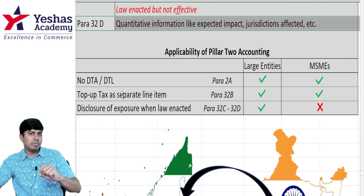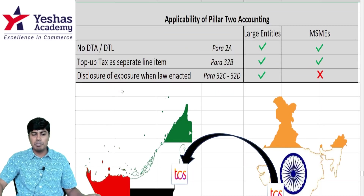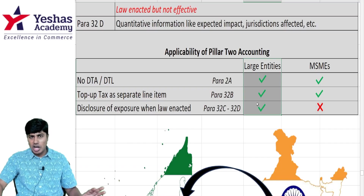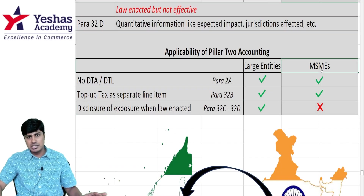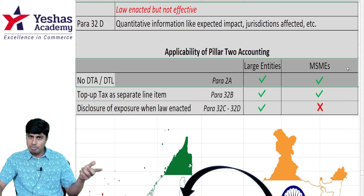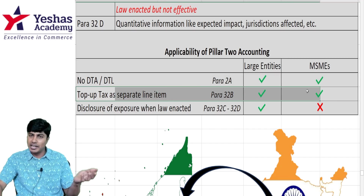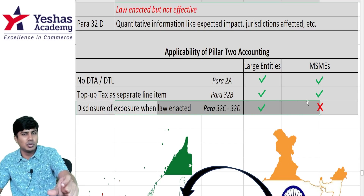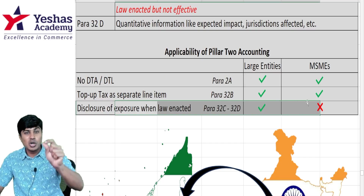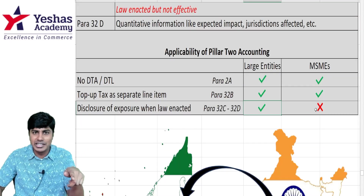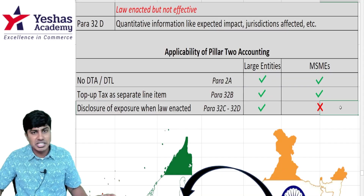How is this applicable and to whom? Everything applies to large entities. For MSMEs, only the no-DTA/DTL rule under para 32A applies, and top-up tax as a separate line item is applicable. But the disclosure requirements under para 32C and 32D — qualitative and quantitative disclosures — are applicable only for large entities, not for MSMEs.